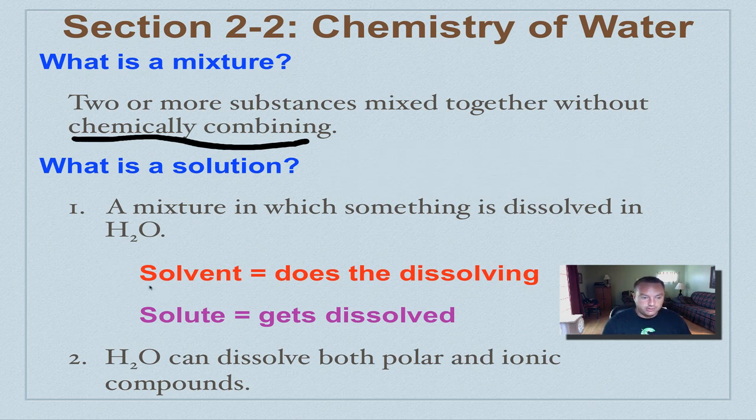A solution has two components. Number one is a solvent—this is the thing that does the dissolving, and it's almost always a liquid. The second is the solute—this is the thing that gets dissolved. It's most commonly a solid,